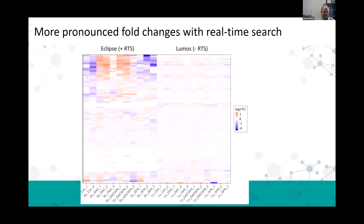What we're seeing here is a set of samples run either on the Eclipse using real-time search or the Lumos without using real-time search. We have two controls, six experimental samples, and another experimental group in which this effect wasn't seen. This upper part of the heat map shows more pronounced changes. We can see the same trend—these proteins are down in the control, up in these cases, and then down. You can still see shades of blue and somewhat red in the Lumos data, but it's much more washed out.